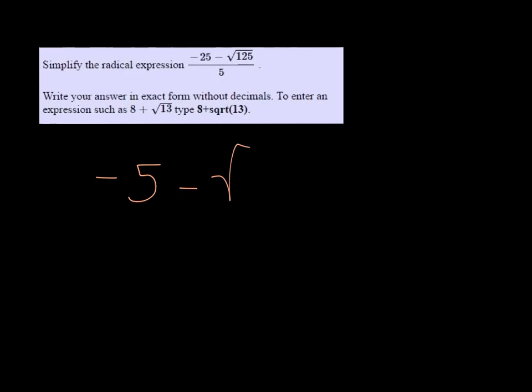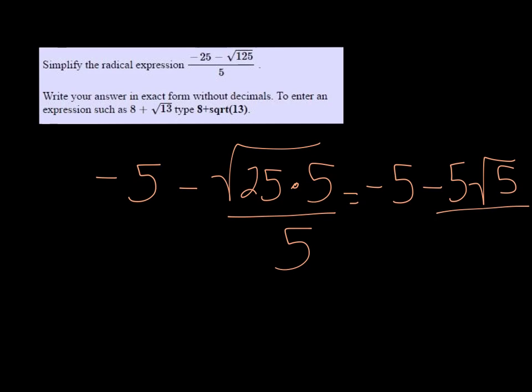And then the square root of 125 is the square root of 25 times 5. So we can pull a 5 out because the square root of 25 is 5. So we get negative 5 minus 5 root 5 all over 5.